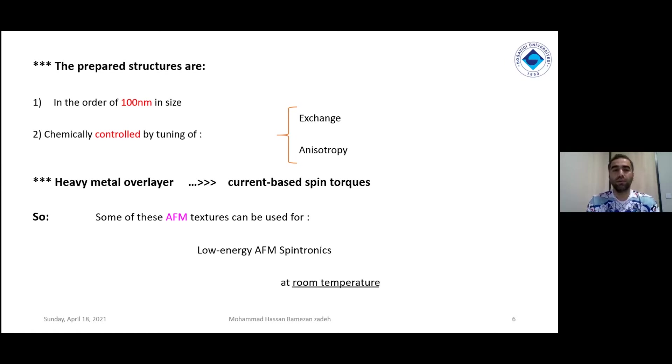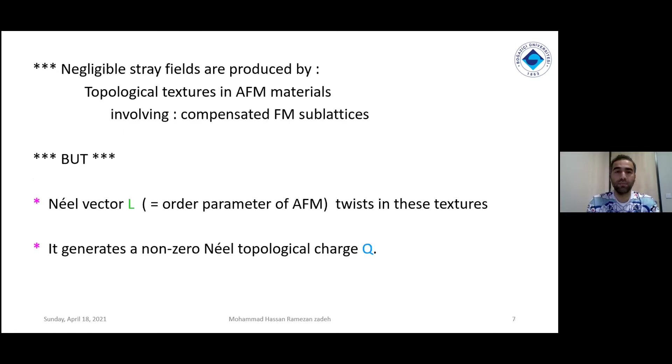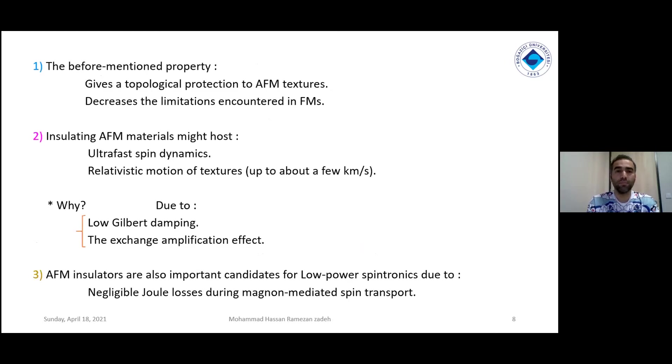They use a heavy metal layer, which causes current-based spin torques. So we will have low-energy antiferromagnetic spintronics in this concept at room temperature. We observe a series of topological textures of antiferromagnetic materials. Also, we have compensated ferromagnetic sublattices, but the Néel vector L, which is assumed as the order parameter of antiferromagnetic spintronics.